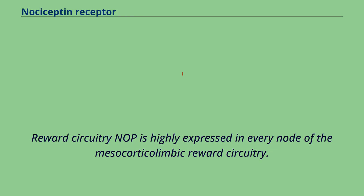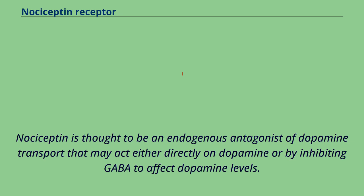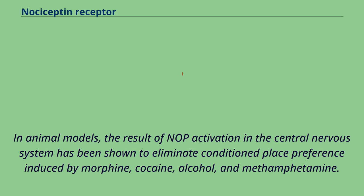Reward circuitry: NOP is highly expressed in every node of the mesocorticolimbic reward circuitry. Unlike opioid agonists such as codeine and morphine, NOP agonists do not have reinforcing effects. Nociceptin is thought to be an endogenous antagonist of dopamine transport that may act either directly on dopamine or by inhibiting GABA to affect dopamine levels. In animal models, NOP activation in the central nervous system has been shown to eliminate conditioned place preference induced by morphine, cocaine, alcohol, and methamphetamine.